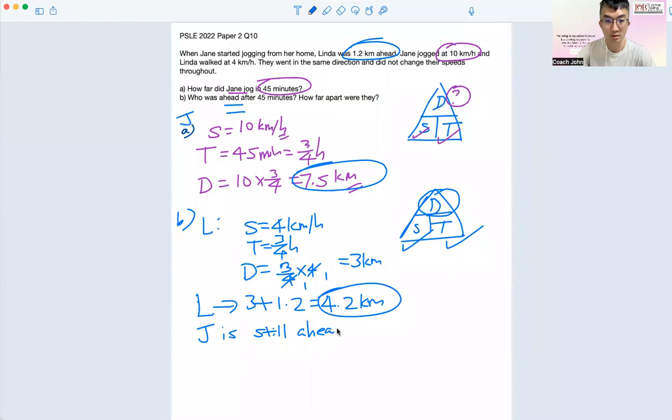Okay, and what's the difference? You'll have 7.5 minus 4.2 to give you 3.3 km. Okay, and then that's the answer for part B.